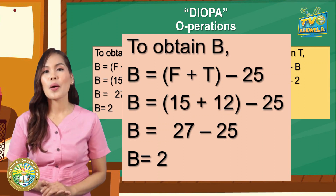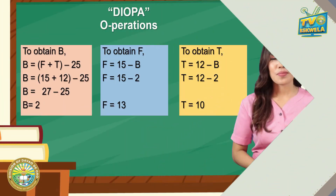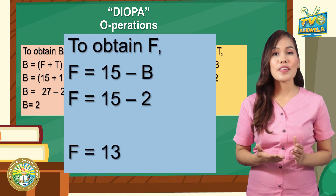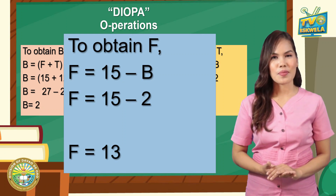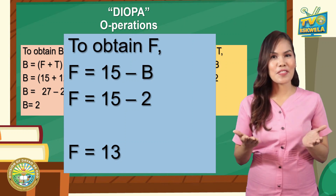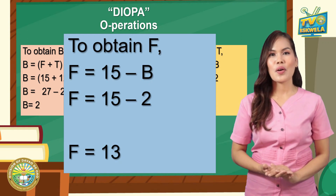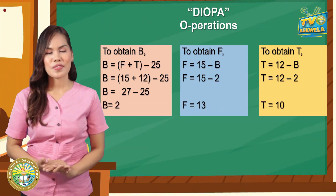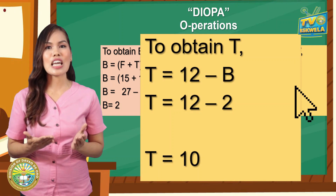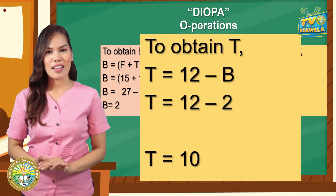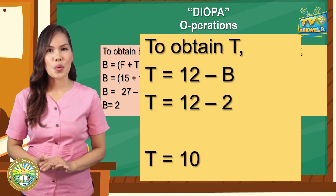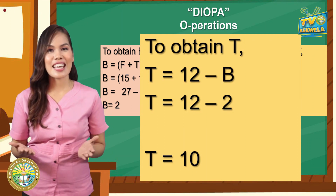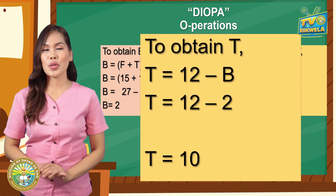The set of students who used both social networking sites is 2. To obtain F: F equals 15 minus B — students who used Facebook minus B. F equals 15 minus 2 by substitution. Then F equals 13 — the set of students who used Facebook only. To obtain T: T equals 12 minus B — set of students who used Twitter only. T equals 12 minus 2 by substitution. Then T equals 10.